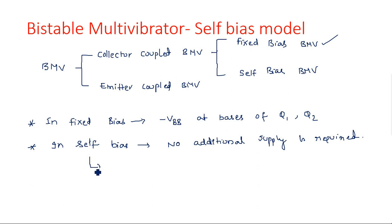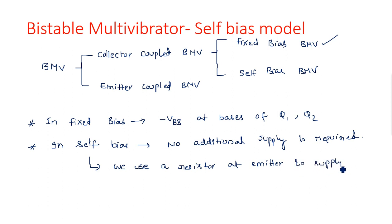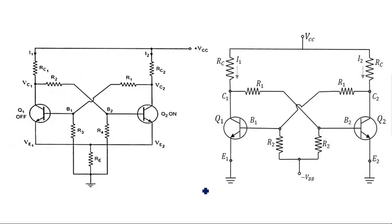You may have a doubt: how will the voltage be provided in this self-biasing network? If you see the diagram, you can understand. In self-bias, we use a resistor at the emitter. That emitter resistor supplies the biasing voltage. So the additional voltage comes from the voltage across the emitter resistor. Now let us see the circuit diagram. The right-hand side circuit diagram is the fixed bias — wherever you see minus VBB, that is fixed bias.